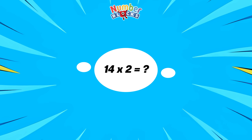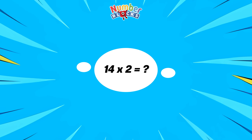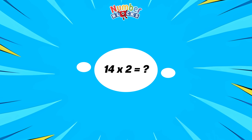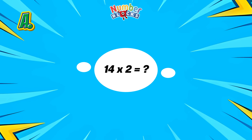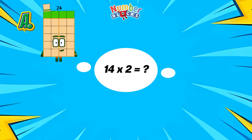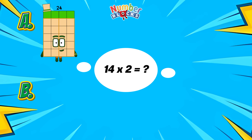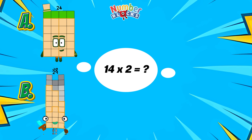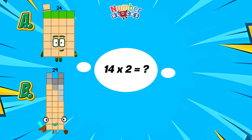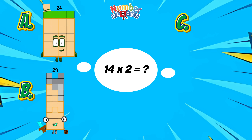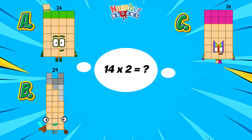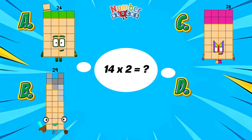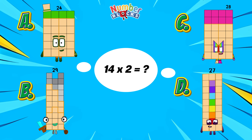14 multiplied by 2 is equals to... A, 24. B, 29. C, 28. Or letter D, 27.